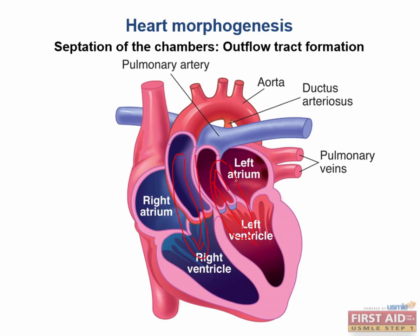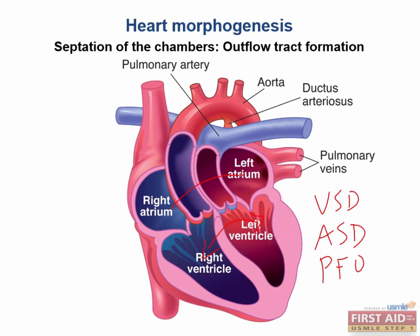How does an infant survive when the pulmonary and the systemic circulations are in two completely separated circuits like this? Well, there has to be some way for blood to mix. We need a VSD, an ASD, or a patent foramen ovale so that the blood can mix within these chambers, because right now they are in two different circuits.